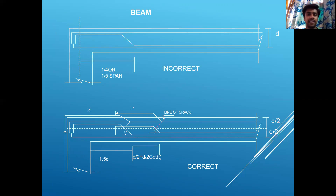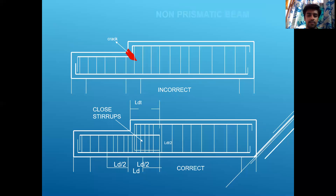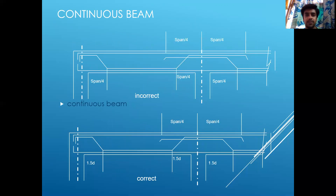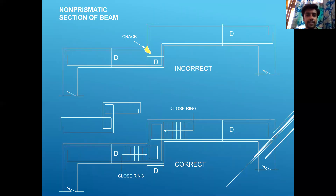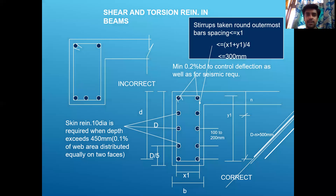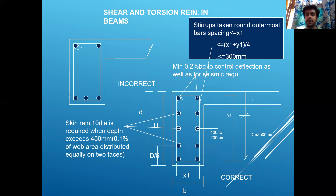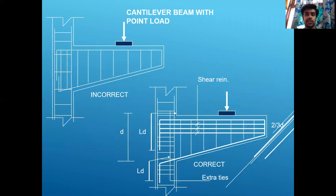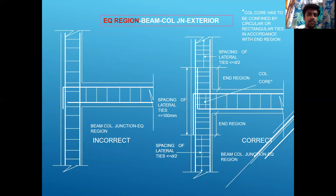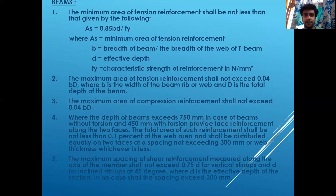For beam detailing, there are incorrect and correct diagrams available in the presentation. The slides cover continuous beams, sloping beams, launch beams, stresses at beam corners, and shear and torsion reinforcement in beams. The labeling of bars separately for torsional and shear reinforcement is demonstrated, as well as a cantilever beam with a point load showing how detailing is carried out.